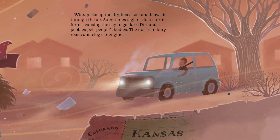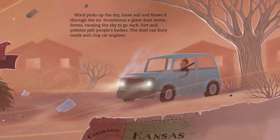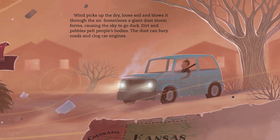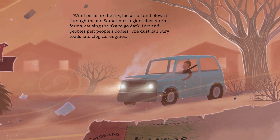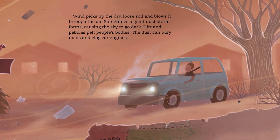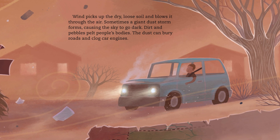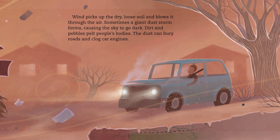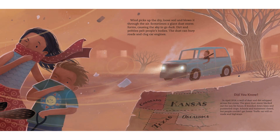Their shriveled roots no longer hold soil in place. Wind picks up the dry, loose soil and blows it through the air. Sometimes a giant dust storm forms, causing the sky to go dark. Dirt and pebbles pelt people's bodies. The dust can bury roads and clog car engines.